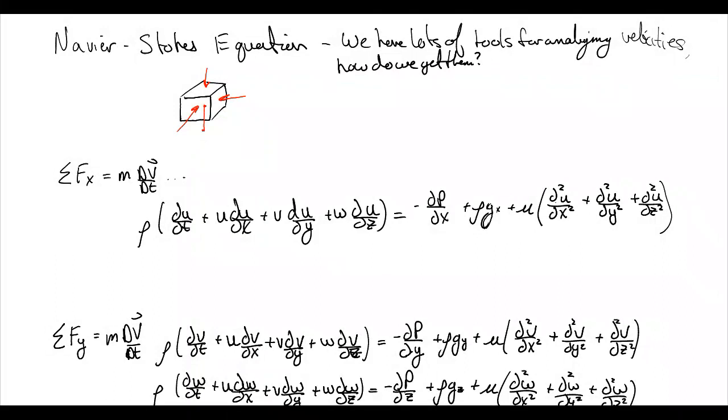In this case, it would be dx, dy, dz times a density. We're going to assume, by the way, our density does not change across our volume.